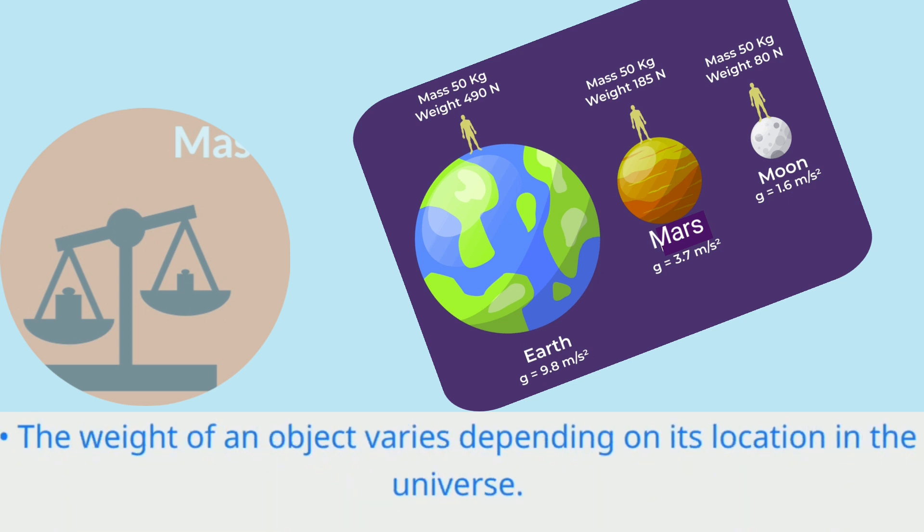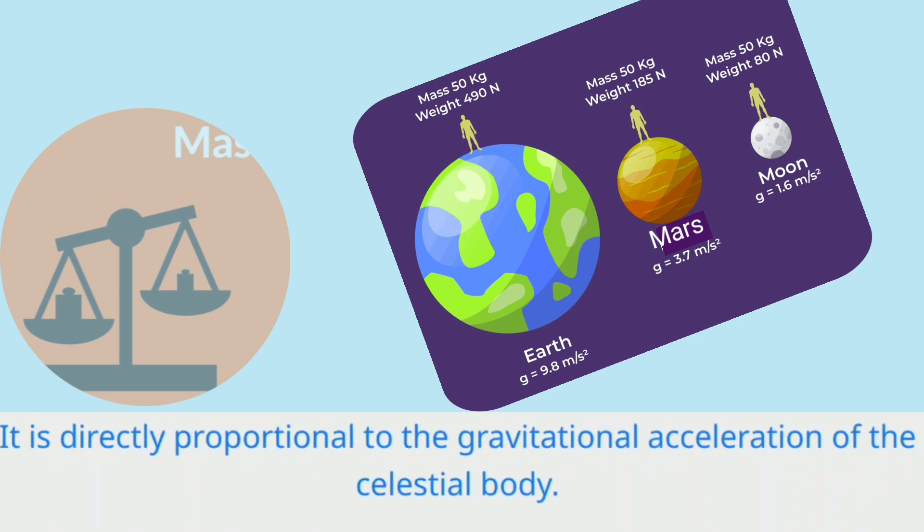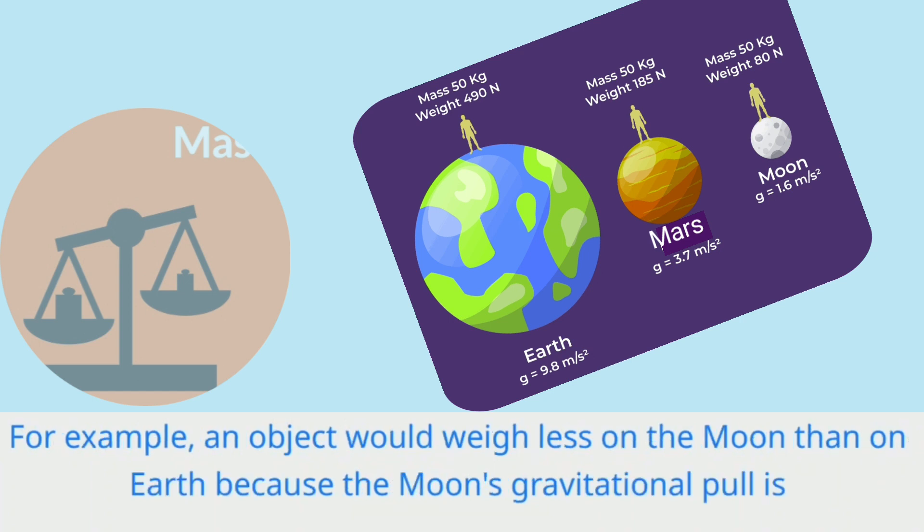The weight of an object varies depending on its location in the universe. It is directly proportional to the gravitational acceleration of the celestial body. For example, an object would weigh less on the moon than on Earth because the moon's gravitational pull is weaker.